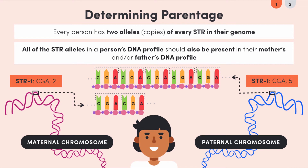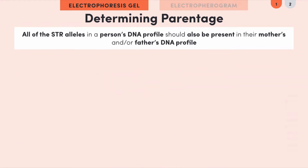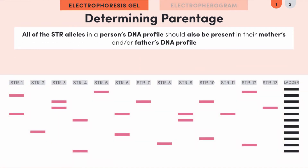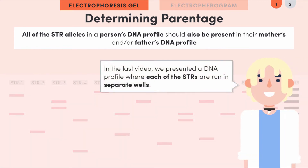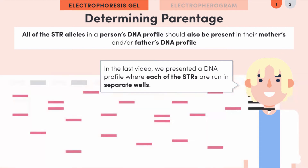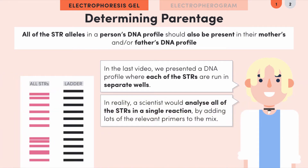Let's look at an example using a DNA profile produced by gel electrophoresis. Each of the STRs can be run in separate wells, but in reality a scientist would just analyze all of the STRs in a single reaction by adding lots of the relevant primers to the mix — making a DNA profile more like this. This shortcut doesn't affect the final result since we're only comparing people's DNA profiles.